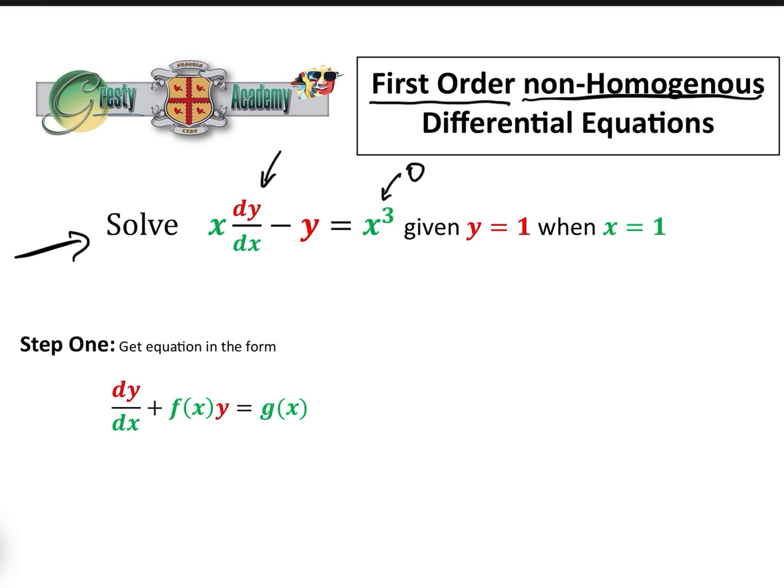If this was zero, then we could actually solve this equation quite easily by separation of variables. So that's what it means.